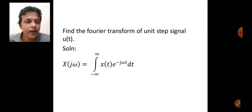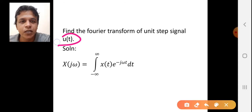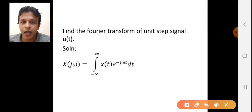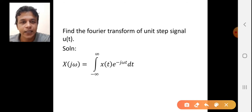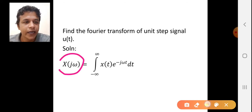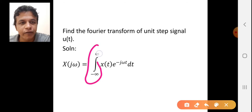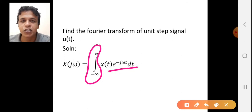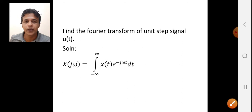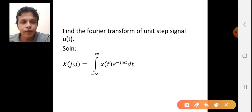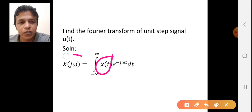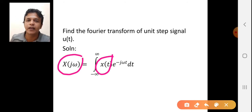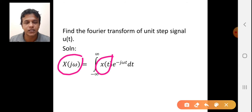The question is: find the Fourier transform of unit step signal u(t). As a first step, we are going to apply the formula of Fourier transform: X(jω) = integration from minus infinity to infinity of x(t) · e^(−jωt) dt. This formula converts a signal in the time domain into a signal in the frequency domain.